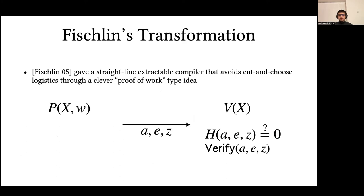Intuitively, the prover sends over transcripts of the form (A, e, z) to the verifier, such that the transcript hashed to the all-zero string, again for a suitably chosen hash function.